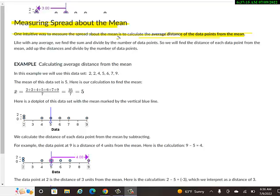It's the mean of the means, the average of all the averages of the distances. Like with any average, we find the sum and divide by the number of data points. So we'll find the distance of each data point from the mean, and we'll add up the distances and divide by the number of data points.